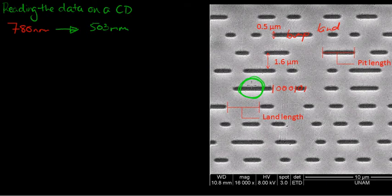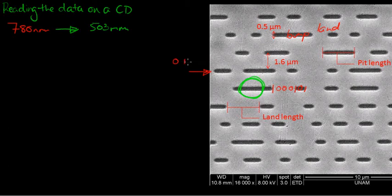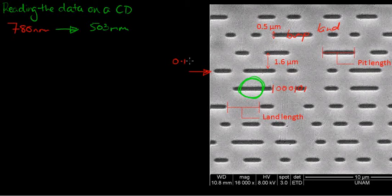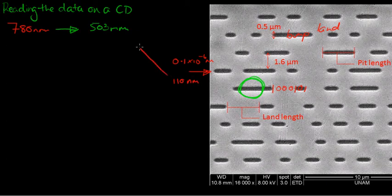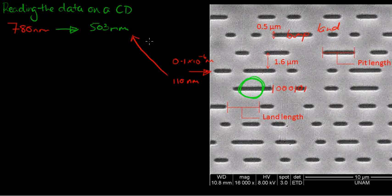One thing that's important that I haven't mentioned is that the height of the bump - if you can imagine these as like islands, how much that island stands up out of the ocean here - is 0.1 by 10 to the minus 6 meters, which is exactly 110 nanometers, which happens to be also about a quarter of that wavelength. So we have 503 nanometers, 110 nanometers, it's about a quarter of that, and that's important.